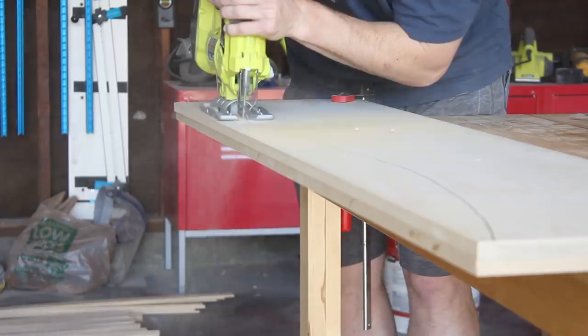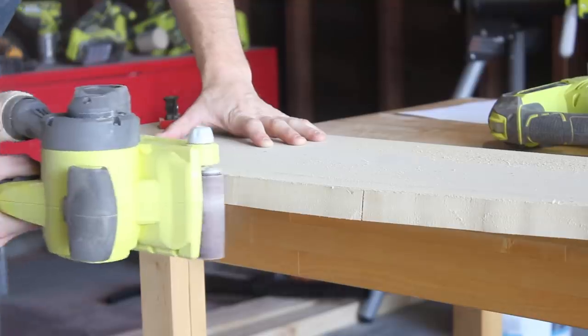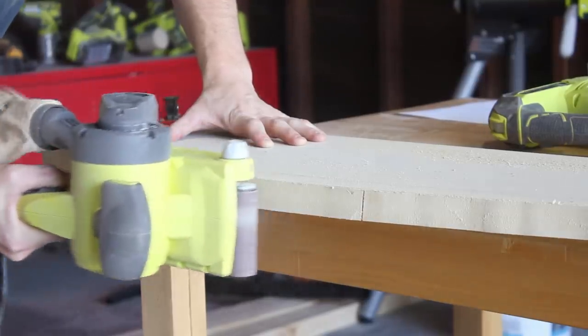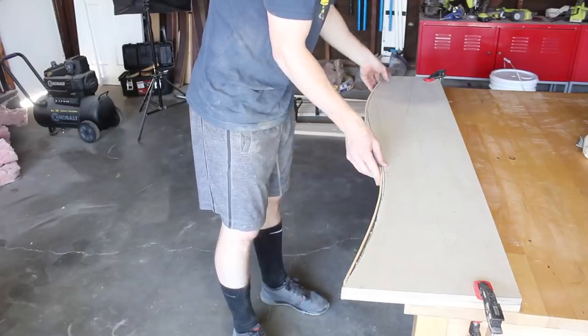I used my jigsaw to cut out the mold and then a belt sander to clean up all the jigsaw cuts, which usually aren't very good. And then here you can see me just testing out how those strips can actually bend to the mold.